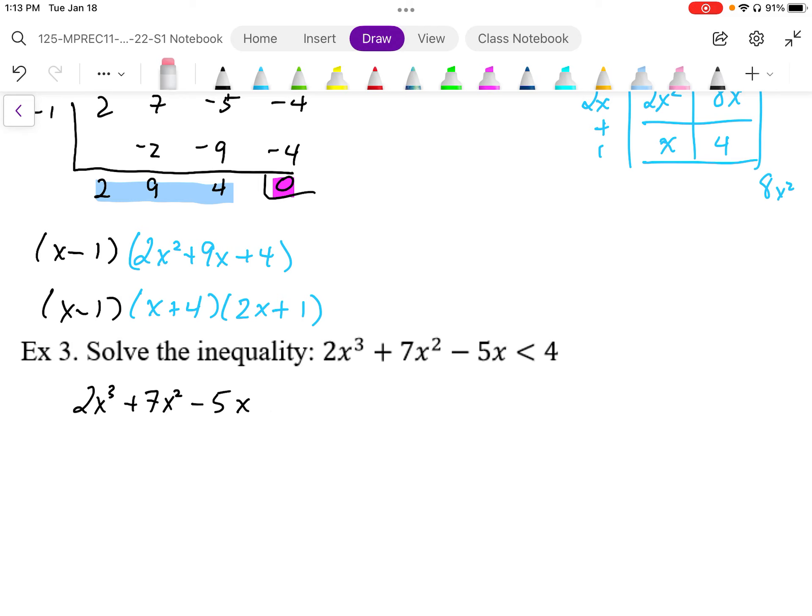Minus 4 is less than 0. We know we can express this polynomial as 2x plus 1 times x plus 4 times x minus 1 is less than 0.